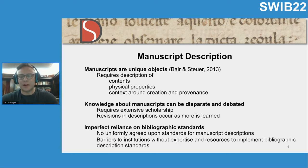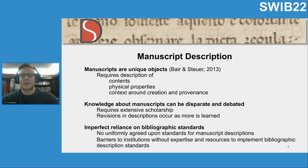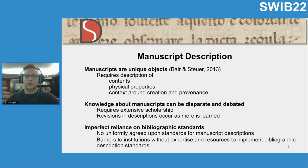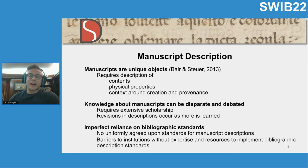We have to think of manuscripts not just as bibliographic materials, but really also as unique objects. That requires a description of not just their contents — what the textual contents are — but also their physical properties: what they're made of, what their dimensions are. In addition, a really important component is the context around which they were created and their provenance — in other words, the chain of folks or institutions that owned them, sold them, or traded them.